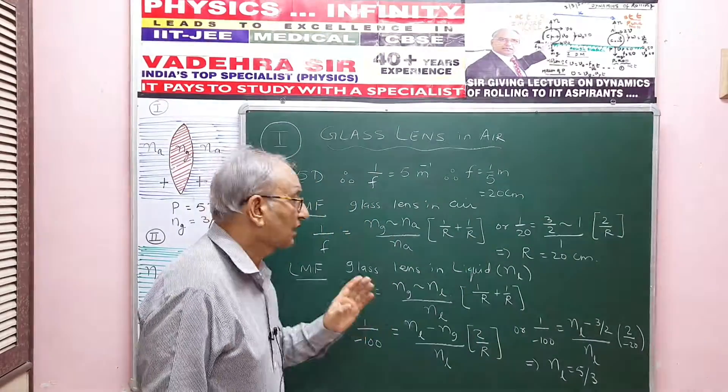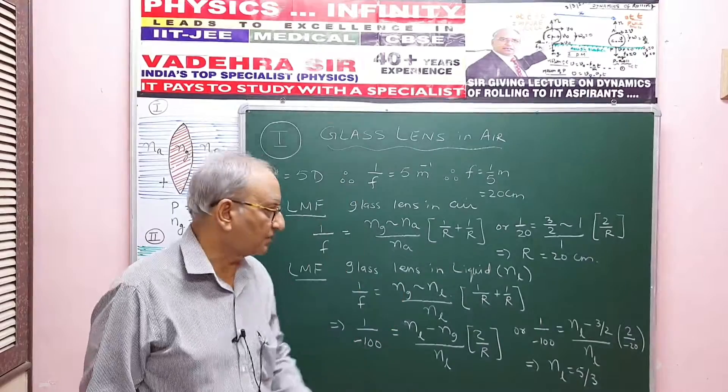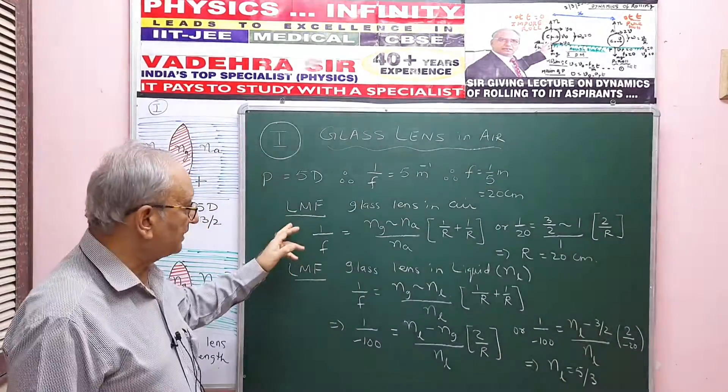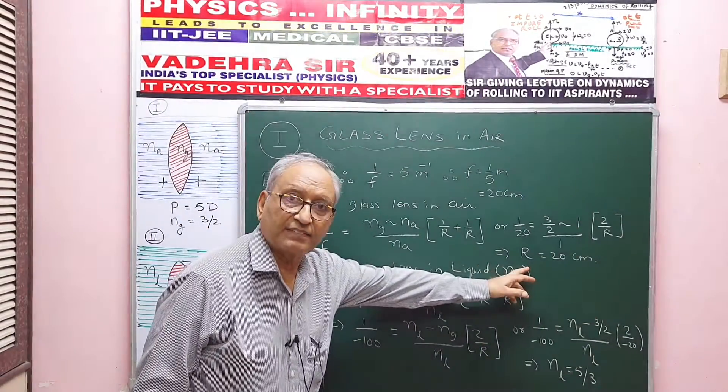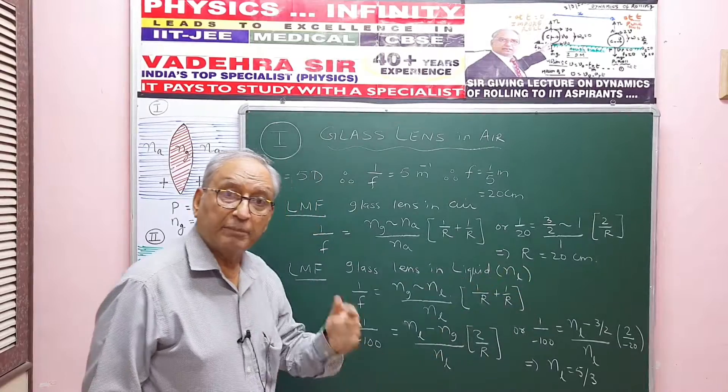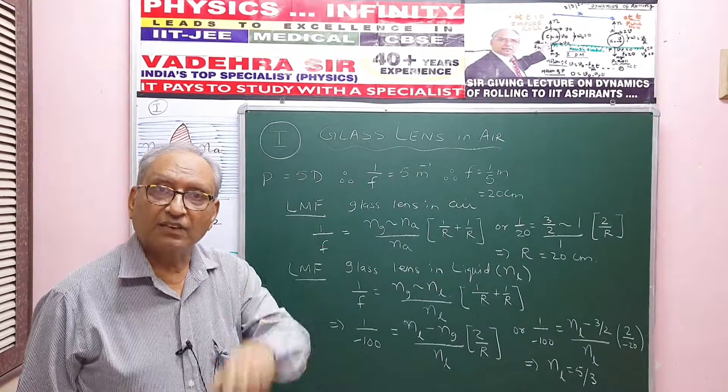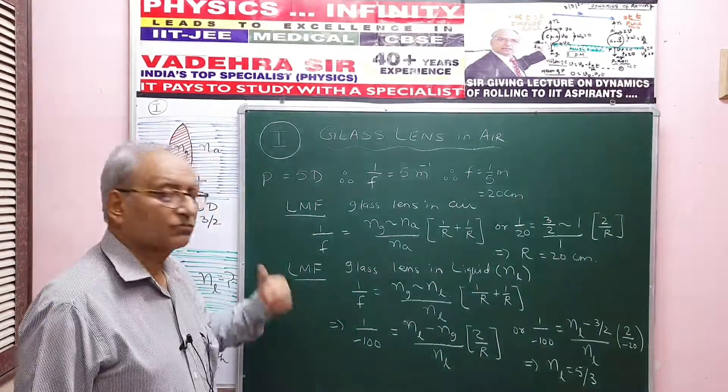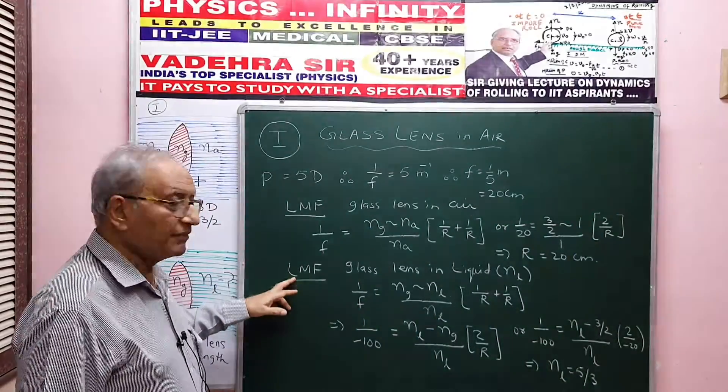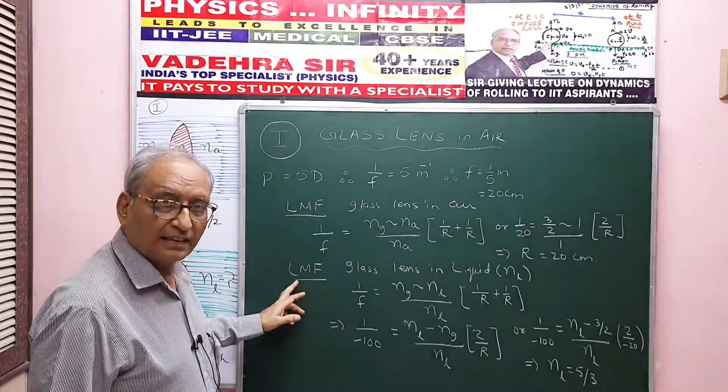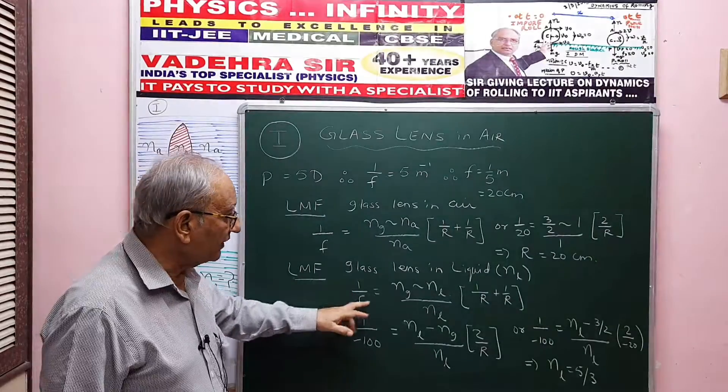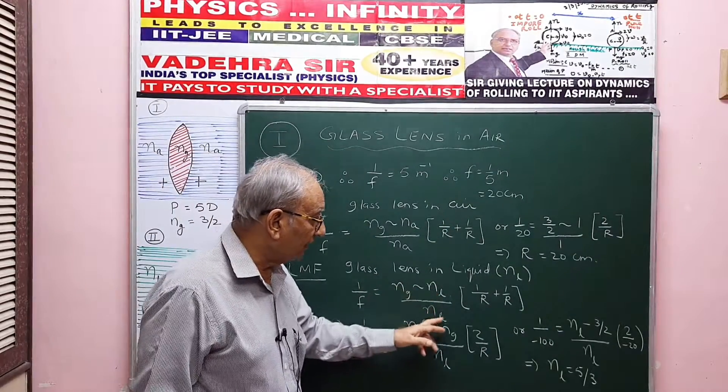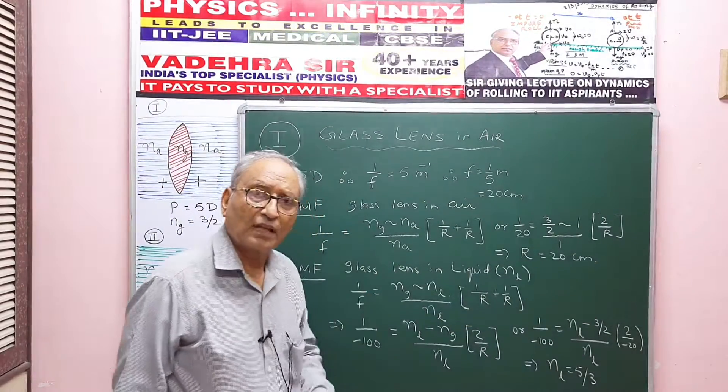Now same lens is kept in liquid of refractive index NL. It becomes a diverging lens, negative power, negative focal length. So lens maker formula again: 1 by F is NG minus NL upon NL into 1 by R plus 1 by R.